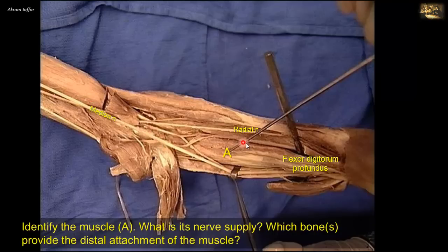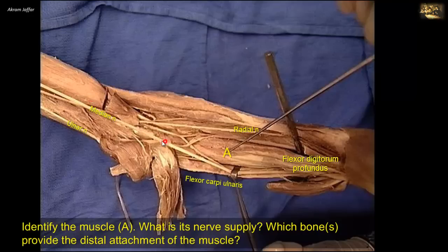Otherwise, it will go straight through the middle of the forearm to reach the front of the wrist. Here is the ulnar nerve lying behind the medial epicondyle of the humerus and then reappearing in the flexor compartment of the forearm, just deep to flexor carpi ulnaris. Again, I repeat, this is not the usual location of the median nerve. It is just being retracted away from the middle of the arm to clearly show the flexor digitorum profundus muscle. So don't be confused.